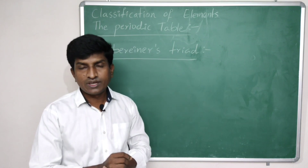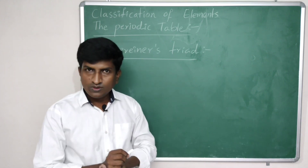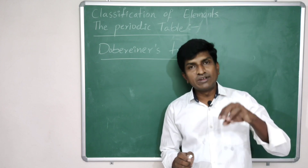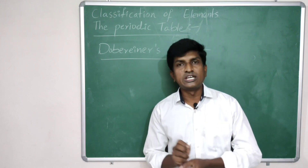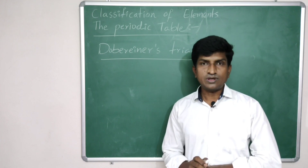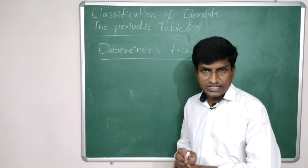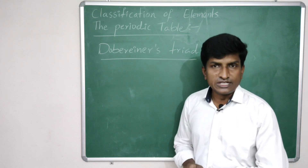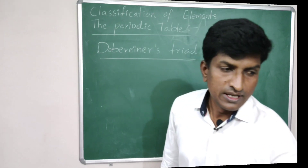What is the relationship between the elements in one triad? In Dobereiner's triads, the average atomic weight of the first element and the third element is almost equal to the atomic weight of the middle element. Dobereiner classified elements based on atomic weight and gave this relationship between atomic weights.